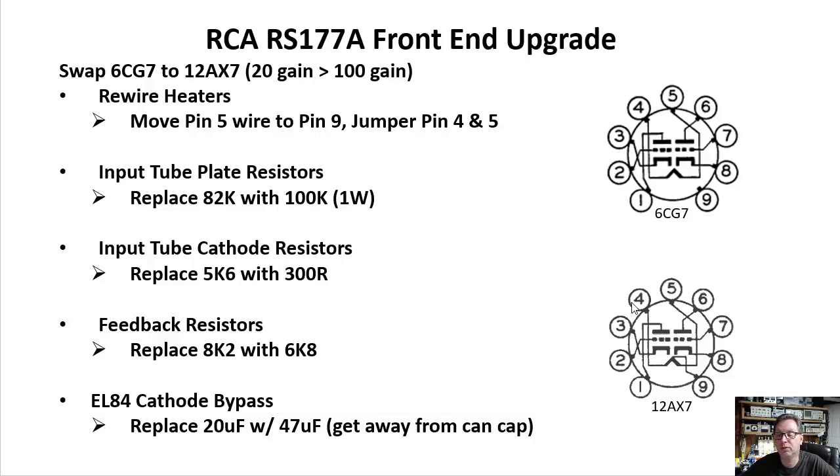What you can do is short 4 and 5 together, and then feed off of 4 and 9, or 5 and 9—doesn't matter if you short them together—and then you can run 6.3 volts there. That's what we have to do here. You'll notice we move pin 5 wire to pin 9. What was feeding this side of the 6.3 volts, we're moving it down to wire 9, and we're jumping 4 and 5 together, leaving the original connection to 4 in place. So basically you're feeding in at 4, coming out 9 with 6.3 volts, and you're tying 4 and 5 together, paralleling the heaters at 6.3 volts. This allows you to use the 12AX7.